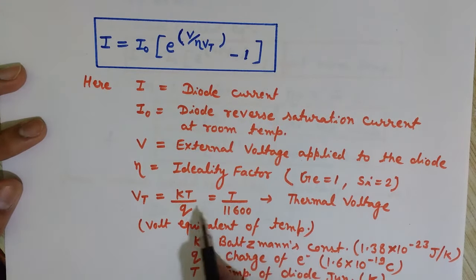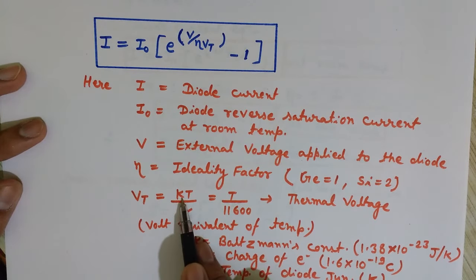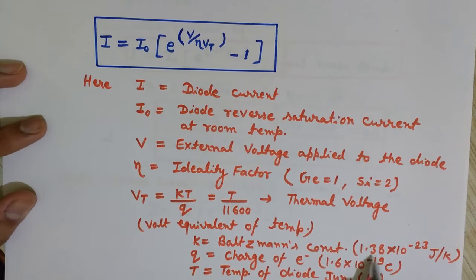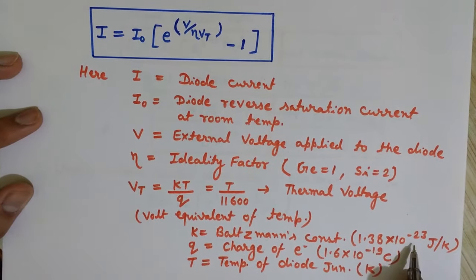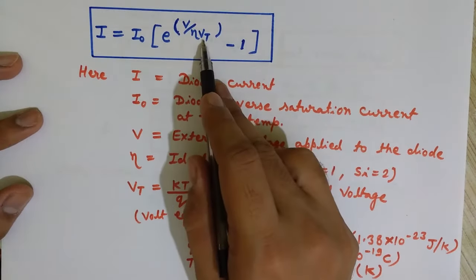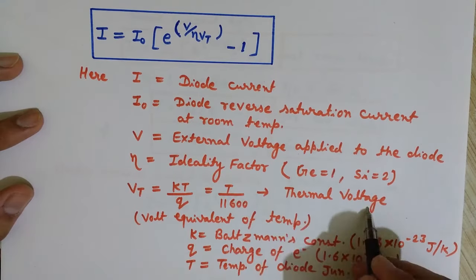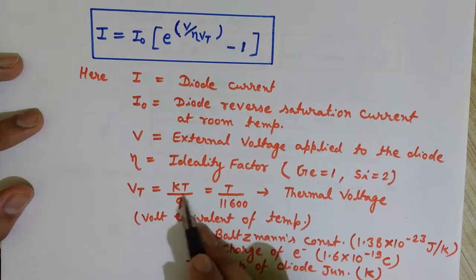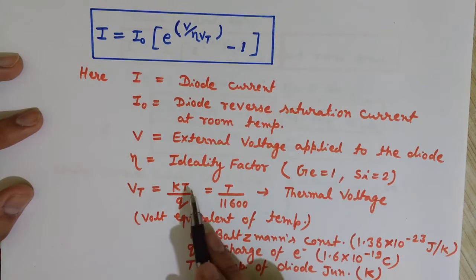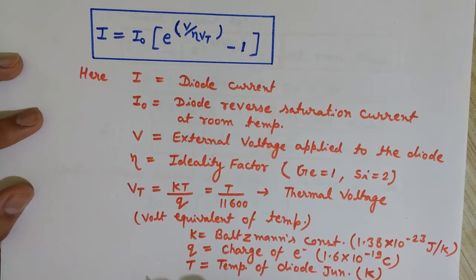VT is denoted as KT divided by Q. K is Boltzmann's constant, whose value is 1.38 × 10⁻²³ joules per kelvin. Q is the charge of the electron, which is 1.6 × 10⁻¹⁹ coulombs. T is the temperature of the diode junction in kelvin.